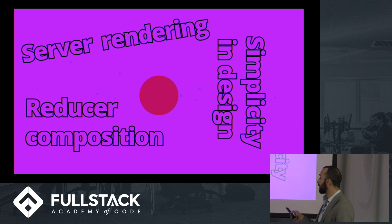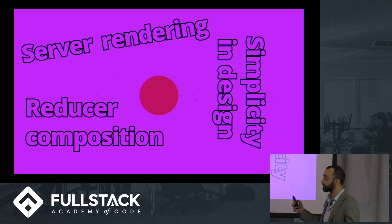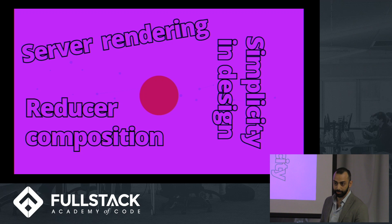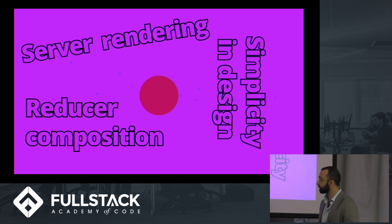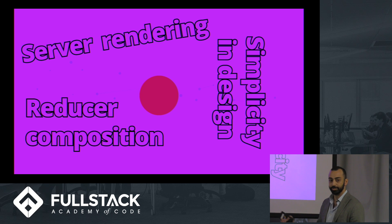You can do reducer composition, which is basically functional composition, because reducers are just functions. And server rendering is a really nice part about it, because since you're just creating one giant object, you can serialize that and store your entire state onto the server, and the next time a user loads up, they can refresh their entire state just from one simple refresh.